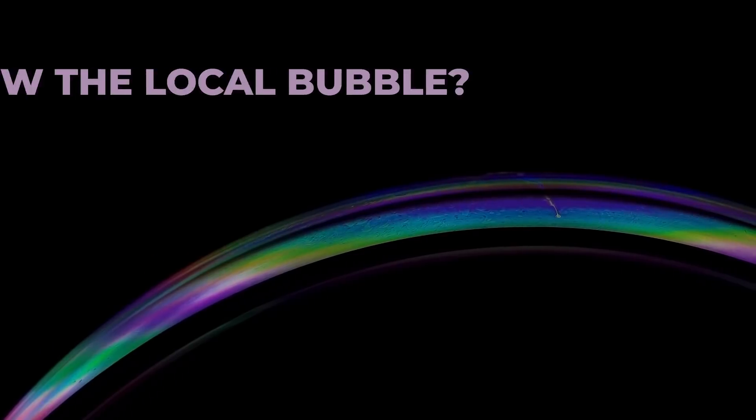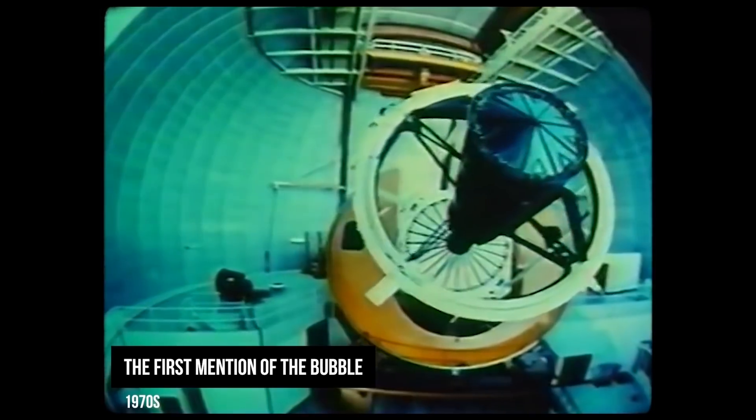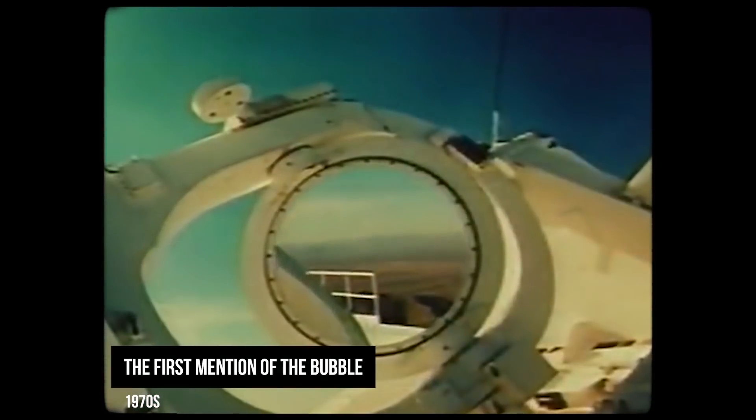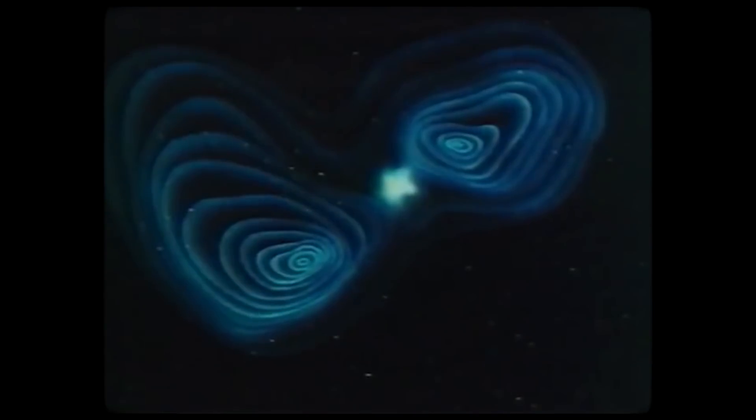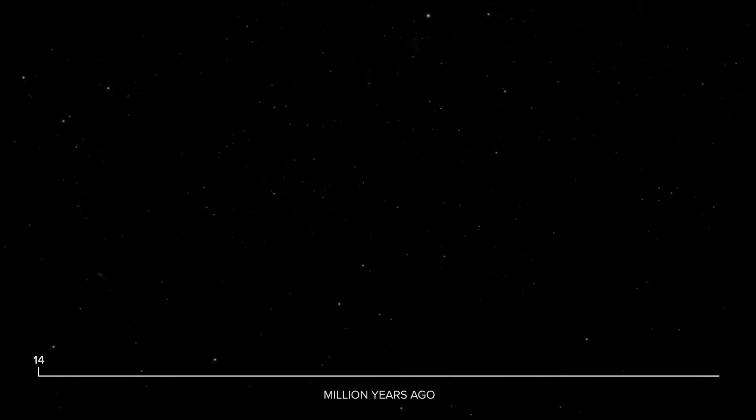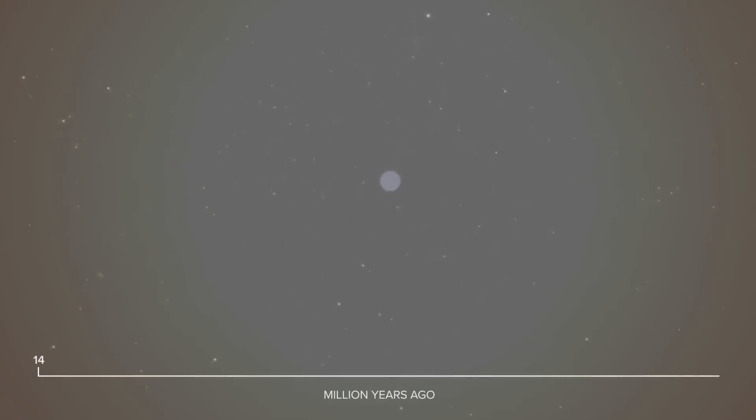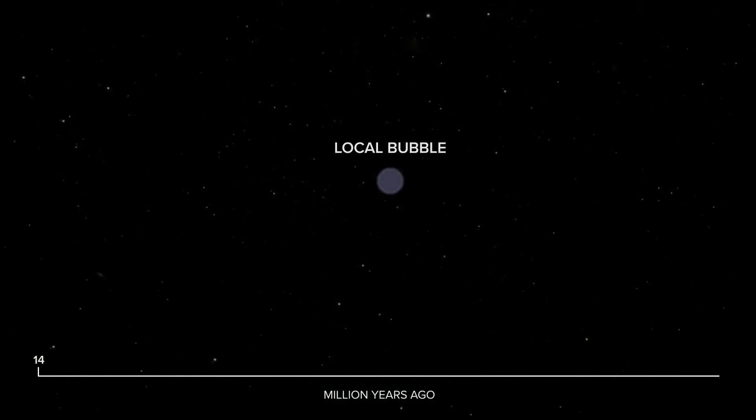But first, let's find out who blew the local bubble. Scientists first mentioned the giant gas bubble back in the 70s, but they had no idea about its exact size, position, interaction with other space objects, or how much time it took to form. The bubble was believed to have formed about 14 million years ago due to a powerful explosion of an ancient supernova.